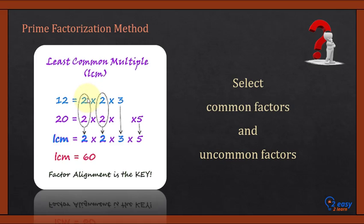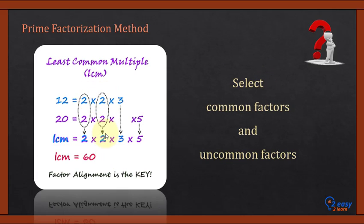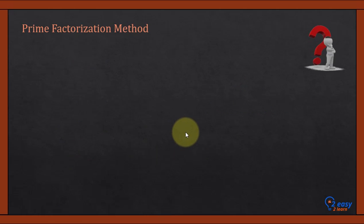Align the numbers so that common factors are matched up. 2 is a common factor, and this 2 is also a common factor. The 3 is not common but we include it. The 5 is also not common in both lists and we include it as well. So 2 × 2 × 3 × 5 = 60, and the LCM of 12 and 20 is 60. The key point is to select both common and uncommon factors.